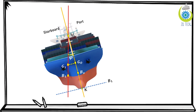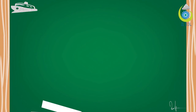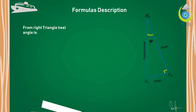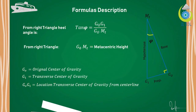This is the scenario of the ship tilted towards the starboard side, and here is the right triangle obtained from the ship. From this triangle, you have to find G0G1 and KG1; once these two are calculated, we can easily find our heel angle phi. The formula from the right triangle is: tan(φ) = G0G1 / G0M, where G0M is the metacentric height, G0 is the original center of gravity, G1 is the transferred center of gravity, and G0G1 is the horizontal distance of the transferred center of gravity from the centerline.